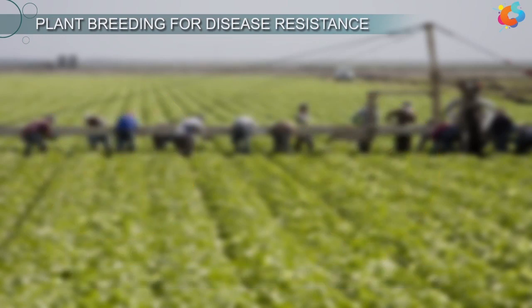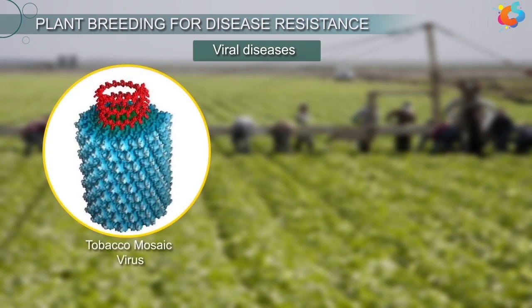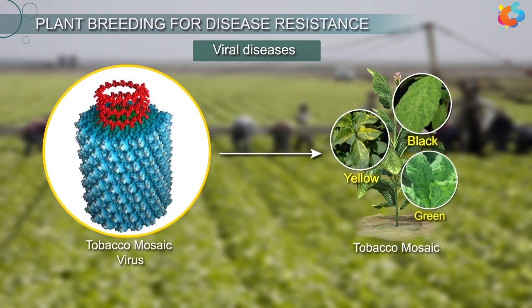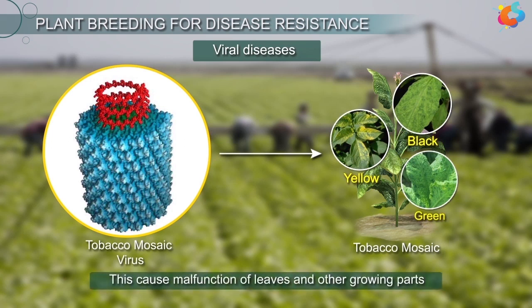Viruses also cause diseases in plants. A virus called tobacco mosaic virus causes a disease called tobacco mosaic in tobacco and other plants. The disease forms white and black, or sometimes yellow and green, patterns on the leaves which looks like a mosaic. This causes malfunction of leaves and other growing parts.